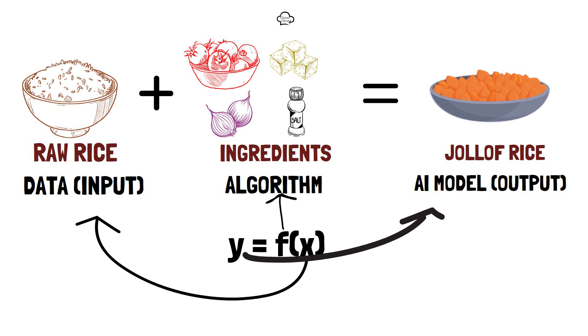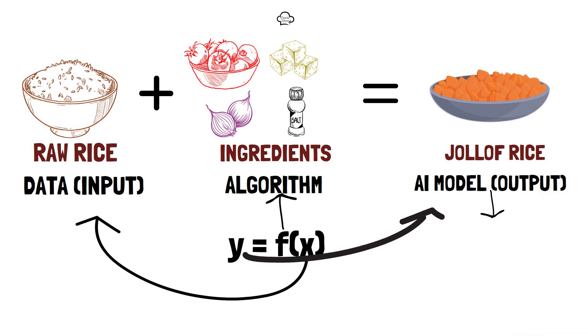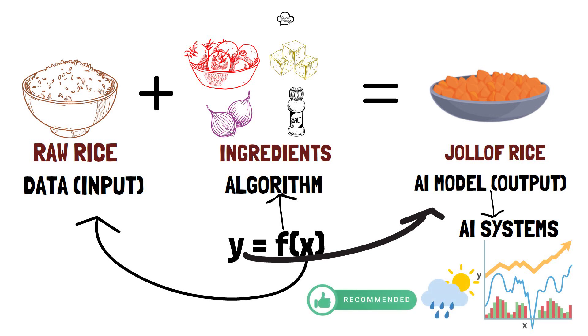Much like the satisfaction you get from eating our yummy Jollof rice, practical applications of our AI models are called AI systems. These AI systems can predict stock prices, forecast the weather and offer tailored product recommendations based on your preferences.